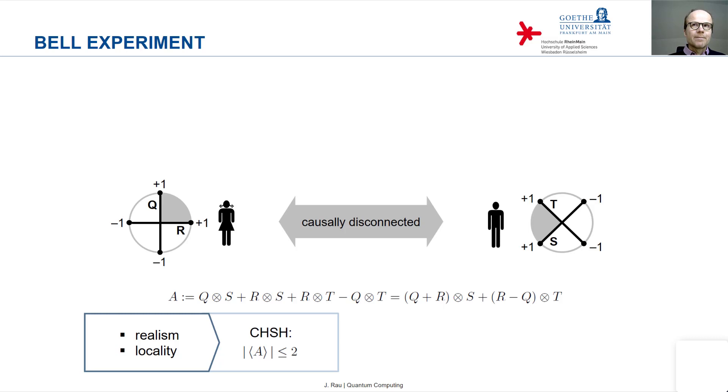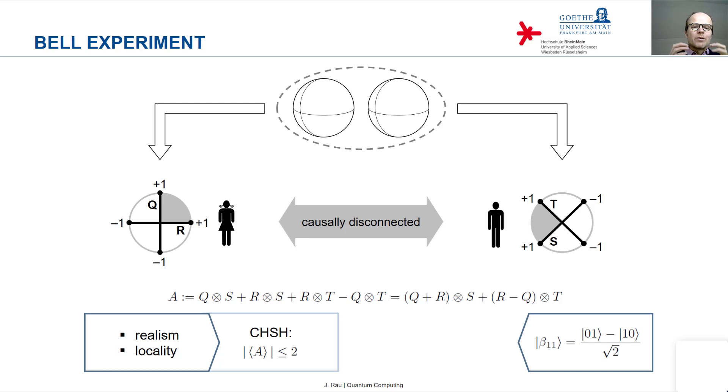Now let's look at what the experiments actually show, what the experiments reveal. If you prepare two qubits in a Bell state, in a particular Bell state, namely the Bell state beta 1-1, it's the formula you see on the bottom right. Now that's the entangled Bell state beta 1-1. And you calculate the expectation value of this observable A in this particular Bell state, then you find that the expectation value of A is actually two times square root of two. And that's not only a theoretical result, but you can in an experiment prepare this Bell state and you can measure the expectation value. And you find, also experimentally, two times square root of two. So it violates the CHSH inequality.